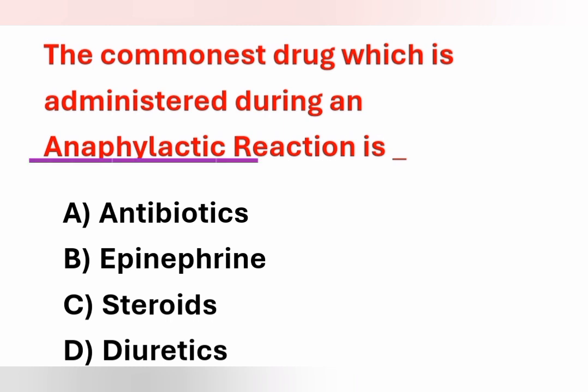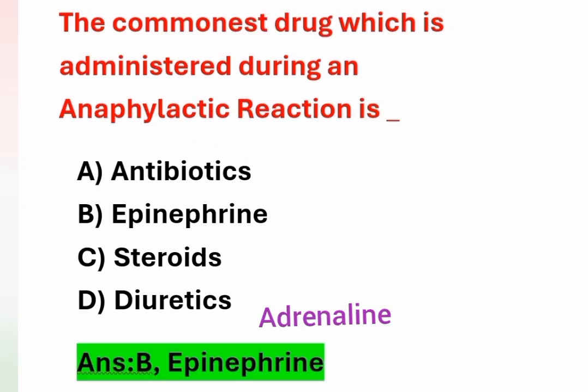Next question: the commonest drug administered during an anaphylactic reaction is which option? Option A – antibiotics. Option B – epinephrine. Option C – steroids. Option D – diuretics. During an anaphylactic or allergic reaction, the most common drug given is adrenaline, also known as epinephrine. Option B is the correct answer. If adrenaline is listed as an option, that would also be correct.